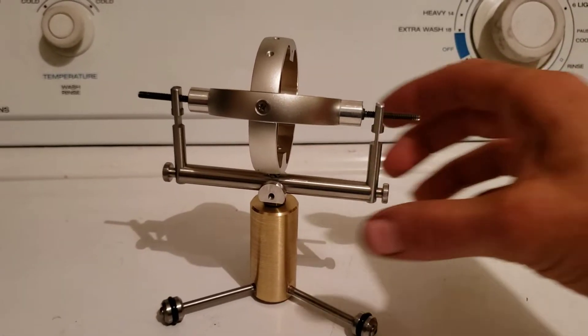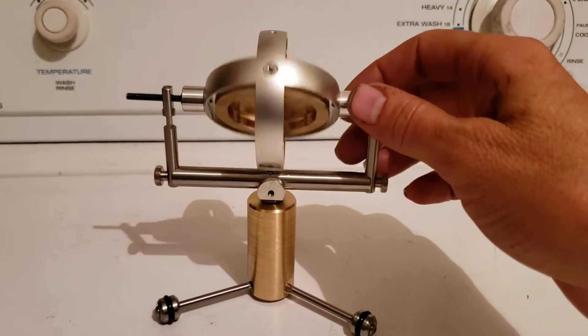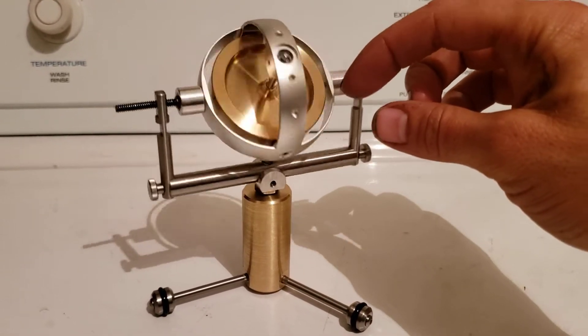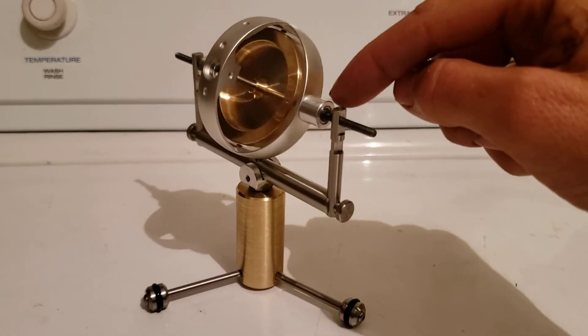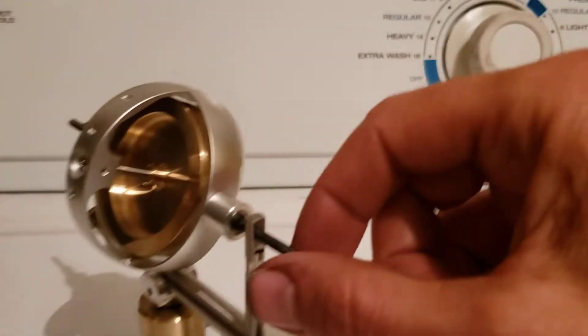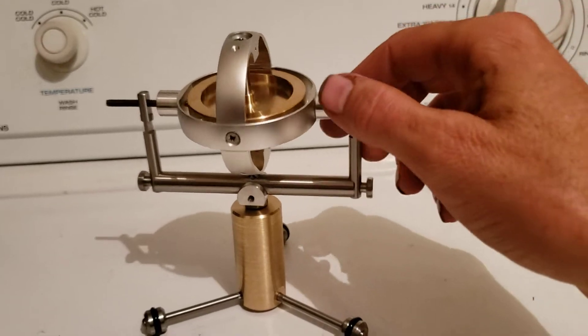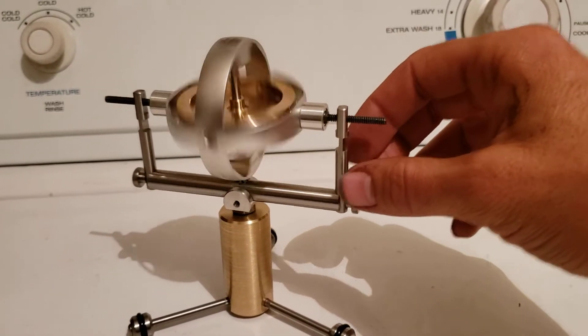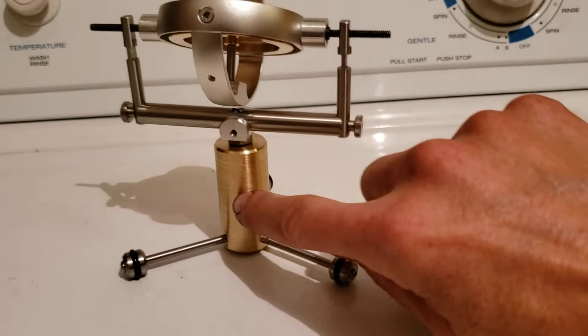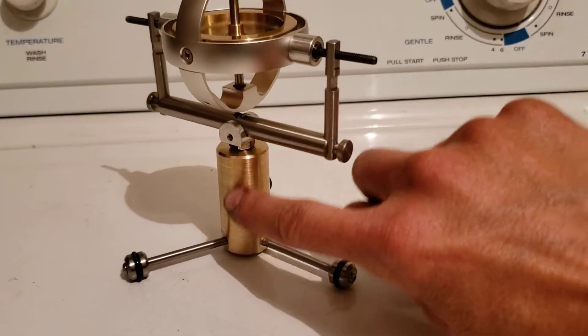Super precision toy gyroscope update number two. Last time I put bearings in here and in here, little tiny buggers to make that spin free. Today I put bearings in here.